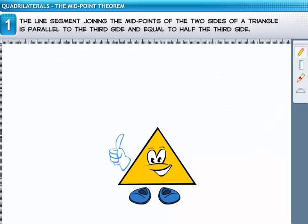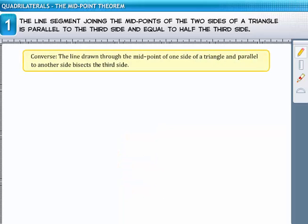The converse of this theorem also holds true. It says, the line drawn through the midpoint of one side of a triangle and parallel to another side bisects the third side.